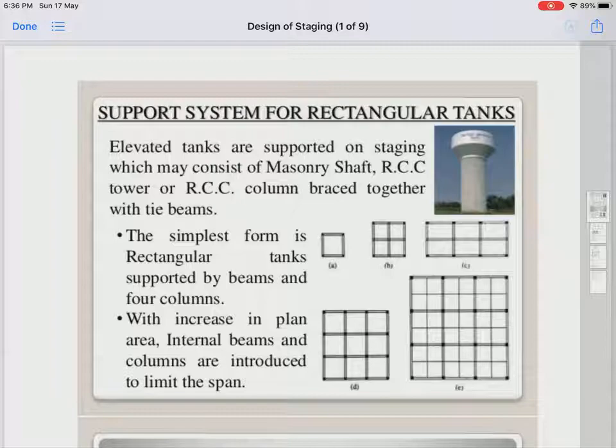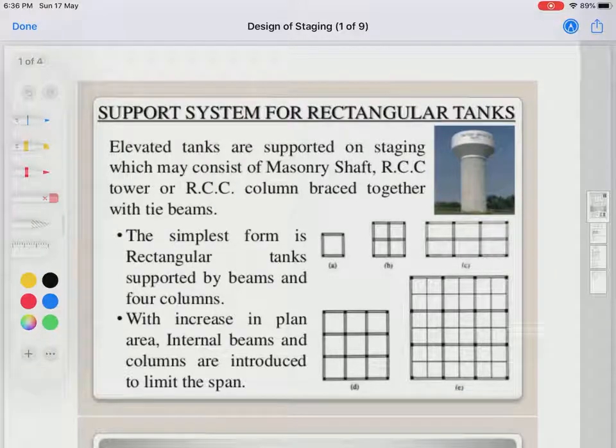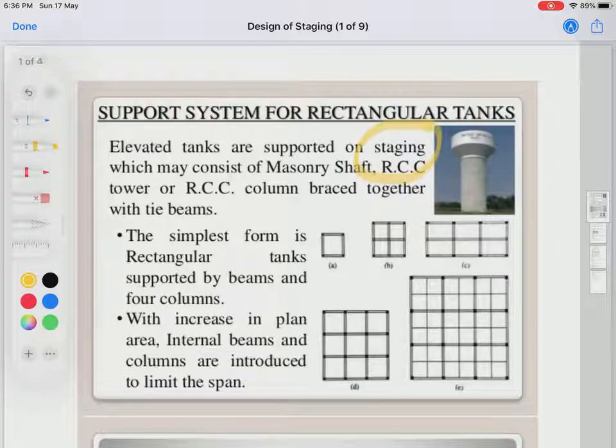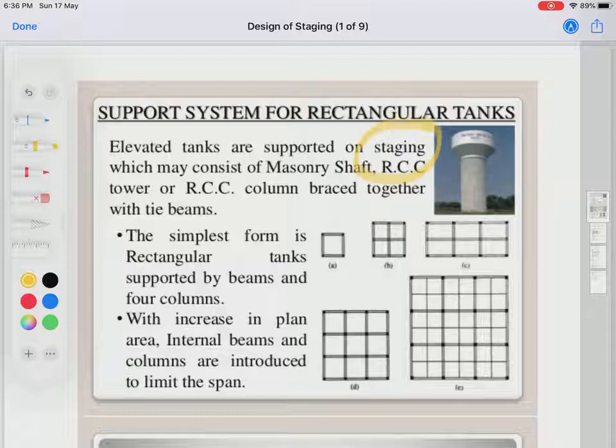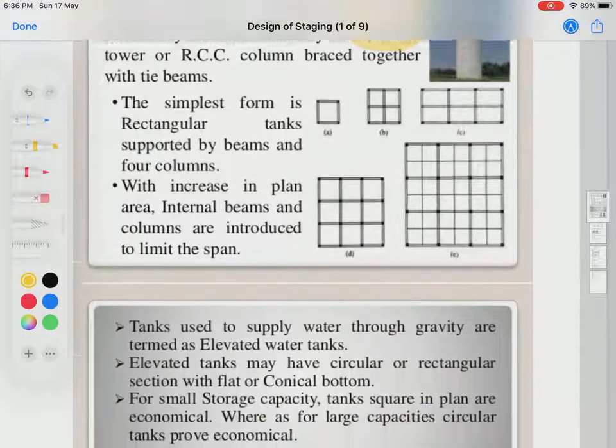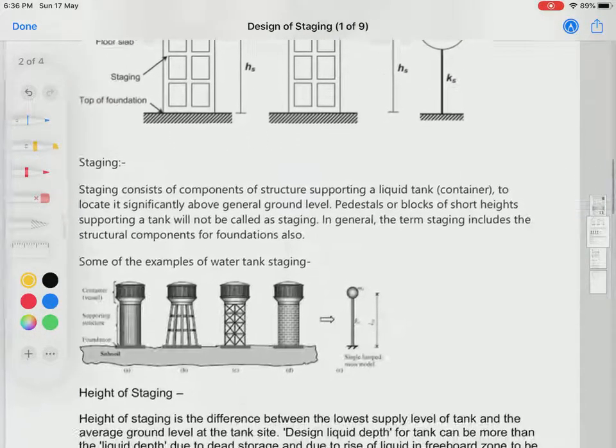We need some structural components. Elevated tanks are supported by a staging mechanism. This staging may consist of masonry shaft, RCC tower, or RCC columns braced together with tie beams.